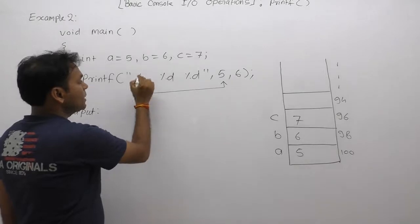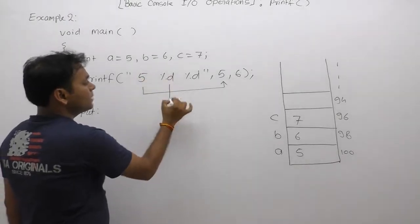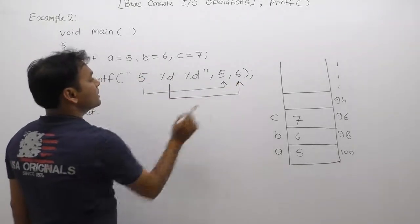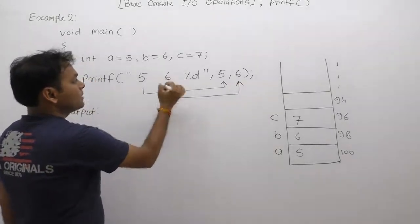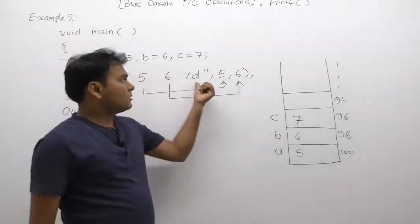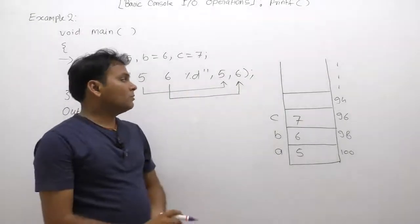Here we are replacing with 5. The next %d, we are replacing with the next corresponding argument as 6. The next one, the third %d, the corresponding argument is not found.